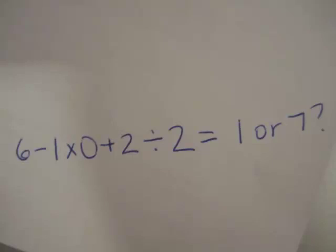Okay, so there is this little math problem going around that is 6 minus 1 times 0 plus 2 divided by 2. And everyone seems to be in one of two camps. One is the answer is 1, and the other camp is the answer is 7. And I am going to show you why the answer is 7.